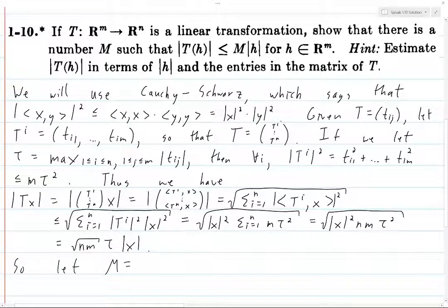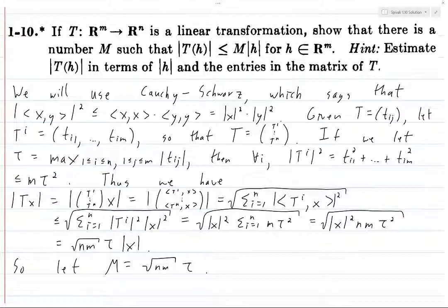So let M be precisely this number, square root of n times m times tau, and then we're done. So I don't know why they used h in here. I just used x because I'm used to using x as a vector. In fact, we should all be at this point because that's what we used throughout this section. But yeah, so I had to use Cauchy-Schwarz, which is more of an advanced tool that I would like to have not needed to use here, but I don't know how to do this exercise without it. So anyways, that's all there is to this exercise, and so we're done.